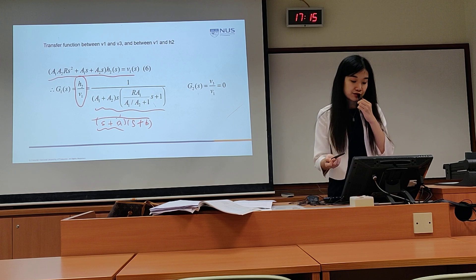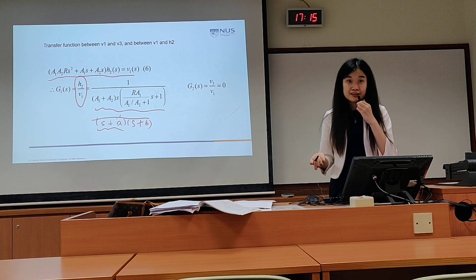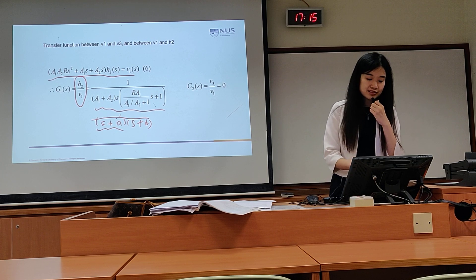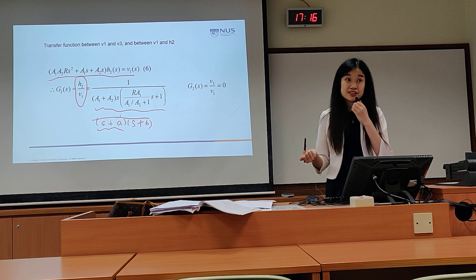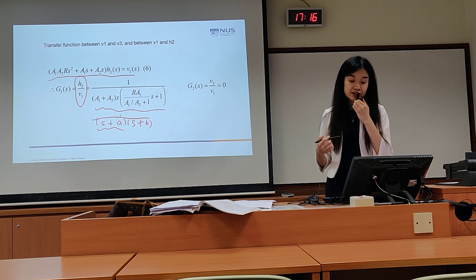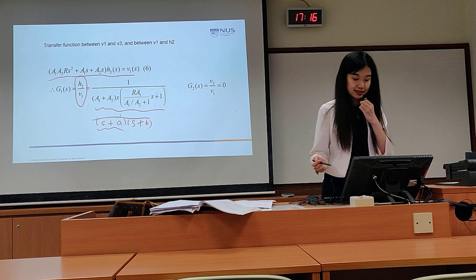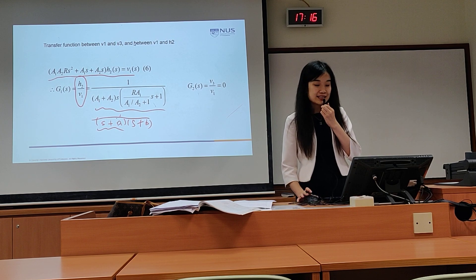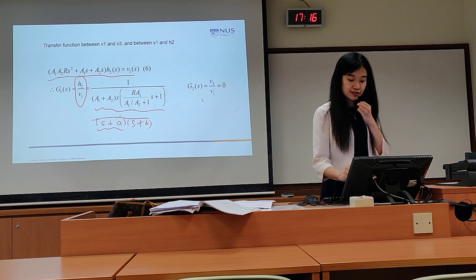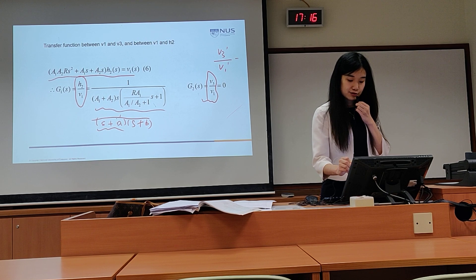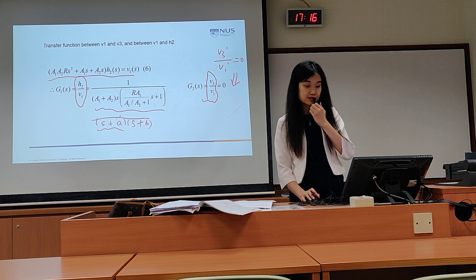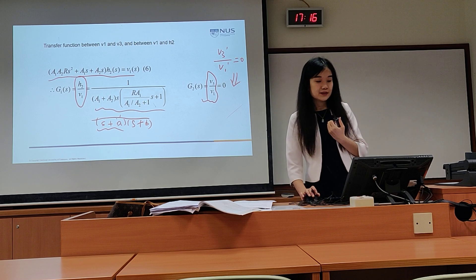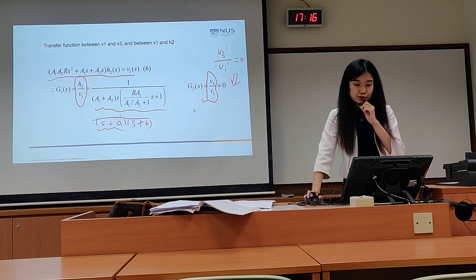This is the final format for the transfer function. With this format, you can tell what the poles are and understand the dynamic features of the system. You can also transform this back to the time domain using existing tables. This is not a unique form — you may write it with different coefficients — but the basic format is consistent. This is H2 over V1. And since V3 prime is always zero, the transfer function V3 over V1 is directly zero.